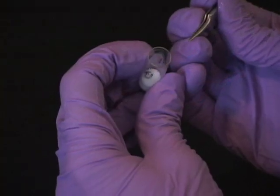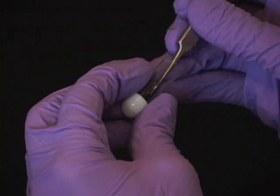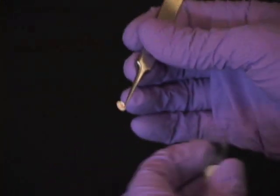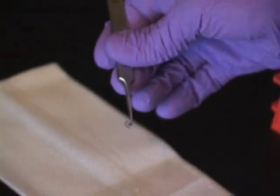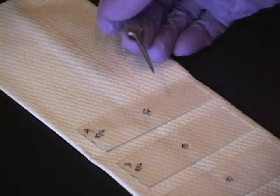With forceps, remove the coverslip and invert it onto 5 mL Citifluor on a slide. The number 3 on the coverslip should now look like a 3.